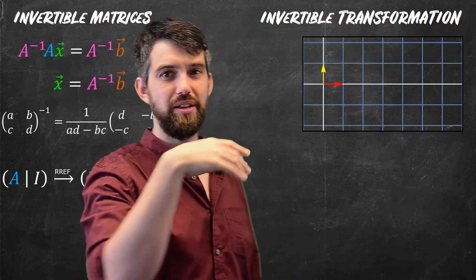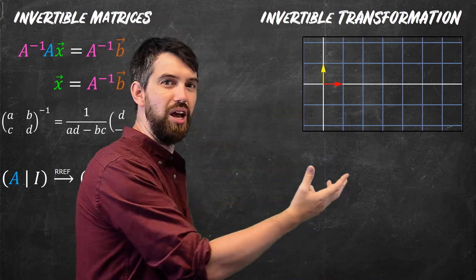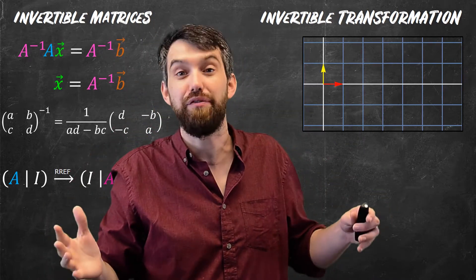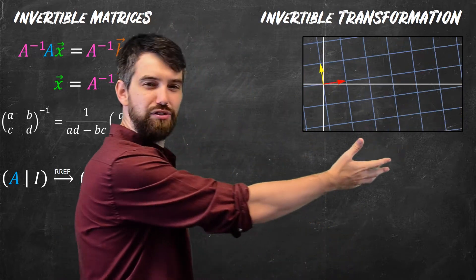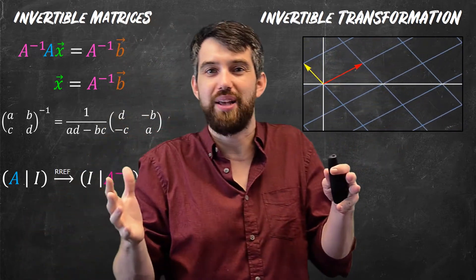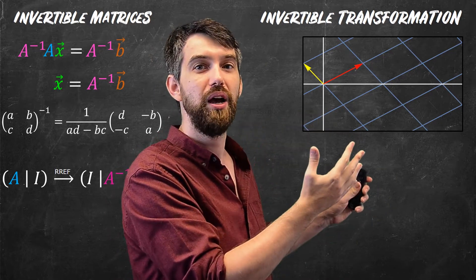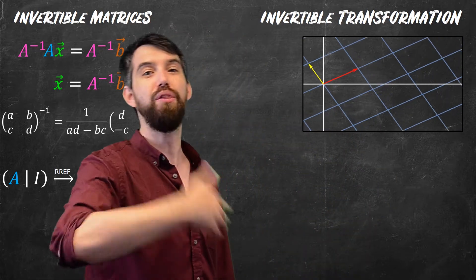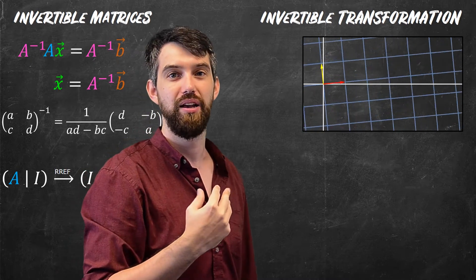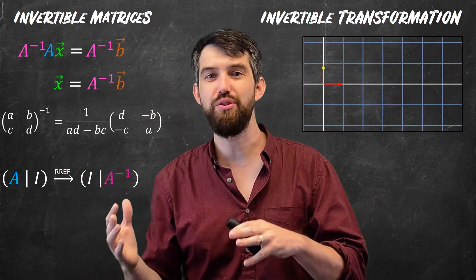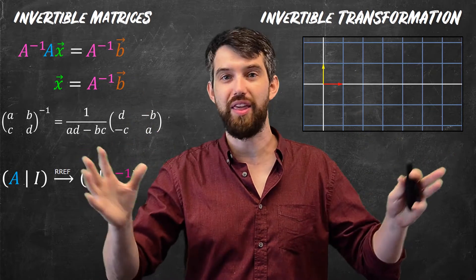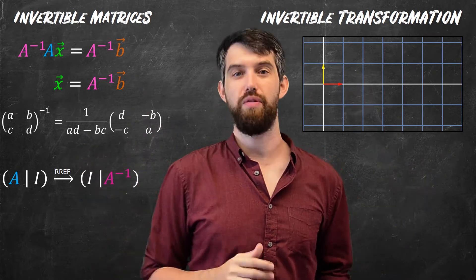But we also had this really nice geometric side where we could take some two-dimensional plane, for instance, we'd apply some transformation to it, it would go off somewhere, and we would look at that, and we would say that invertible transformations were those where I could undo the process, where there was some other transformation that put everything back to where it began. So what I want to do is I want to prove that these two different things in different domains really are the same.